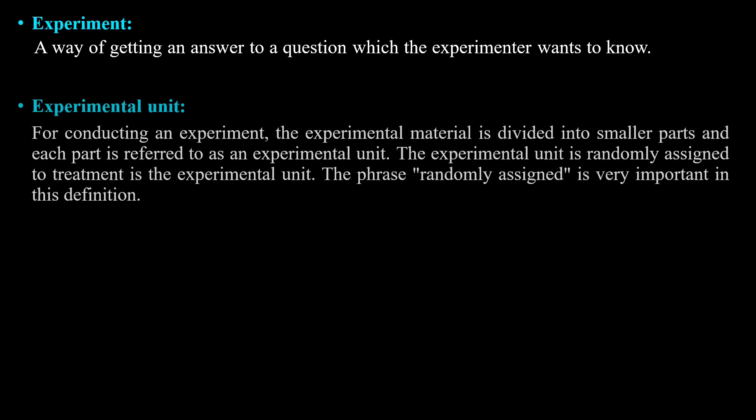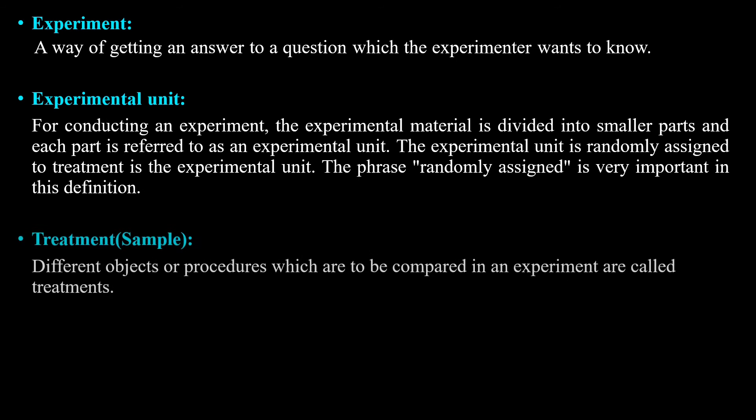First term: experiment. An experiment is a way of getting an answer to a question which the experimenter wants to know — that is, getting a solution to a given problem. Second: experimental unit. For conducting an experiment, the experimental material is divided into smaller parts, and each part is referred to as an experimental unit. The experimental unit is randomly assigned to the treatment.